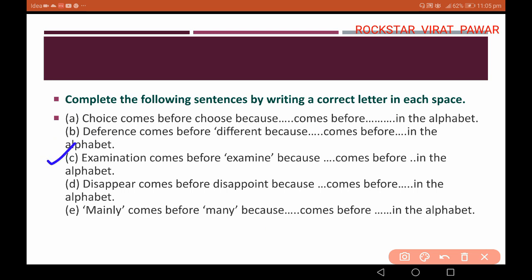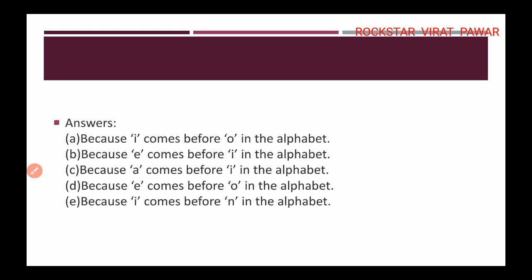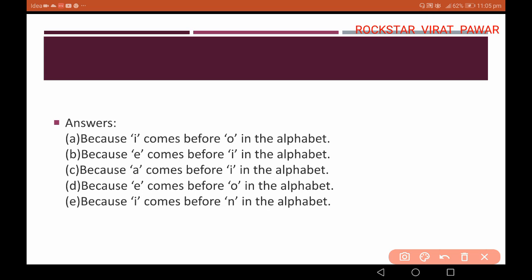You can see question C: 'examination comes before examine because dash dash comes before in the alphabet.' Give your answer in the comment box. Next question: 'disappear comes before disappoint because dash comes before in the alphabet.' And: 'mainly comes before many because dash comes before dash in the alphabet.'